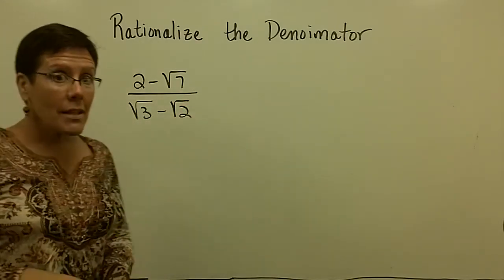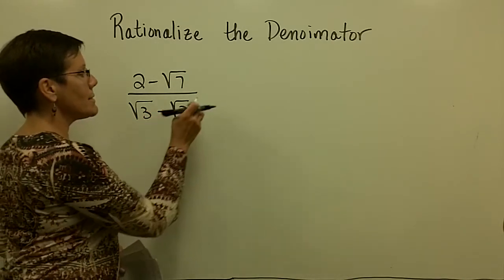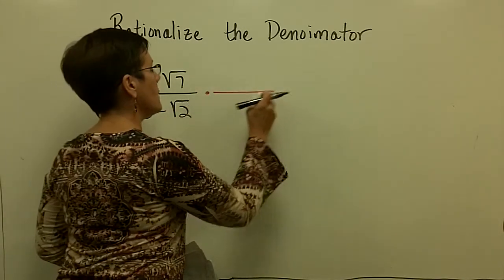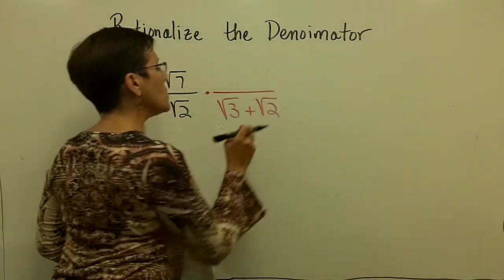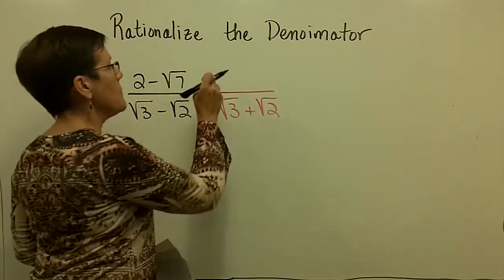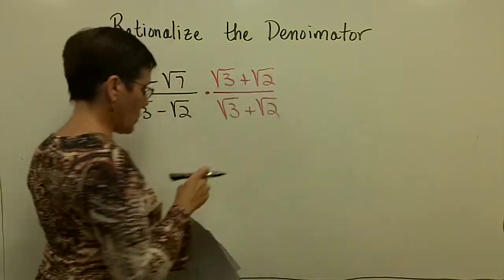So I'm looking at the denominator, and I want the conjugate of the denominator. That's going to have a plus sign in there - still the square root of 3, still the square root of 2, but with a plus sign. And so upstairs, I have to multiply that by the square root of 3 plus the square root of 2.